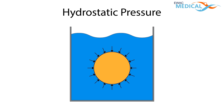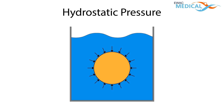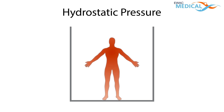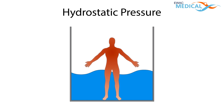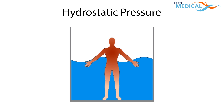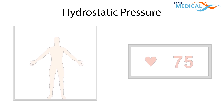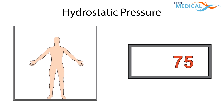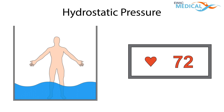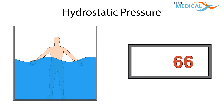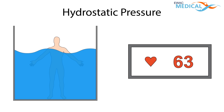Hydrostatic pressure. Water exerts a pressure on any object that is submerged — this pressure is called hydrostatic pressure. When the human body is submerged in water, hydrostatic pressure forces the blood to the central part of the body. Because the heart senses there is more blood available and therefore it can operate more efficiently, the heart rate slows down.